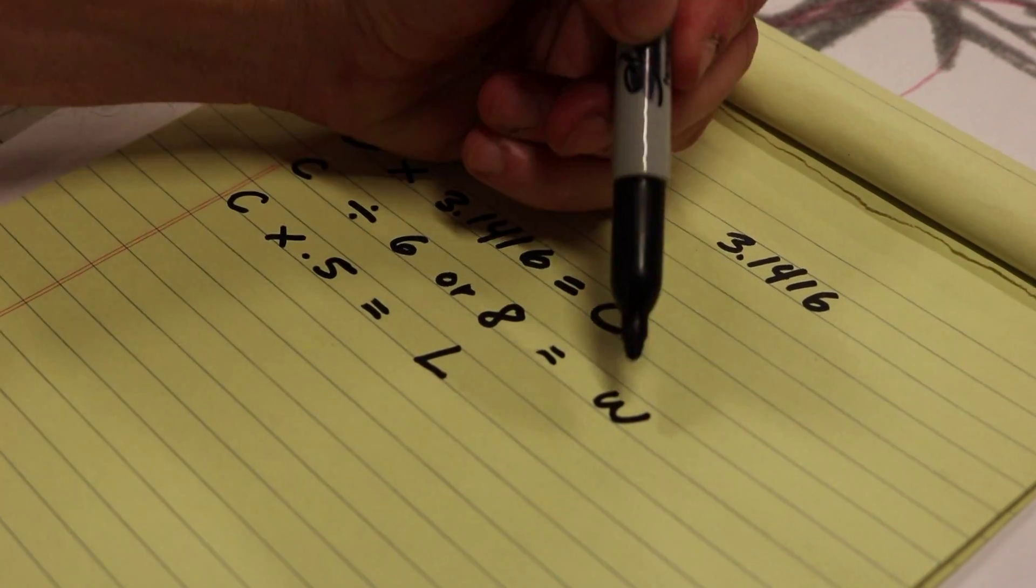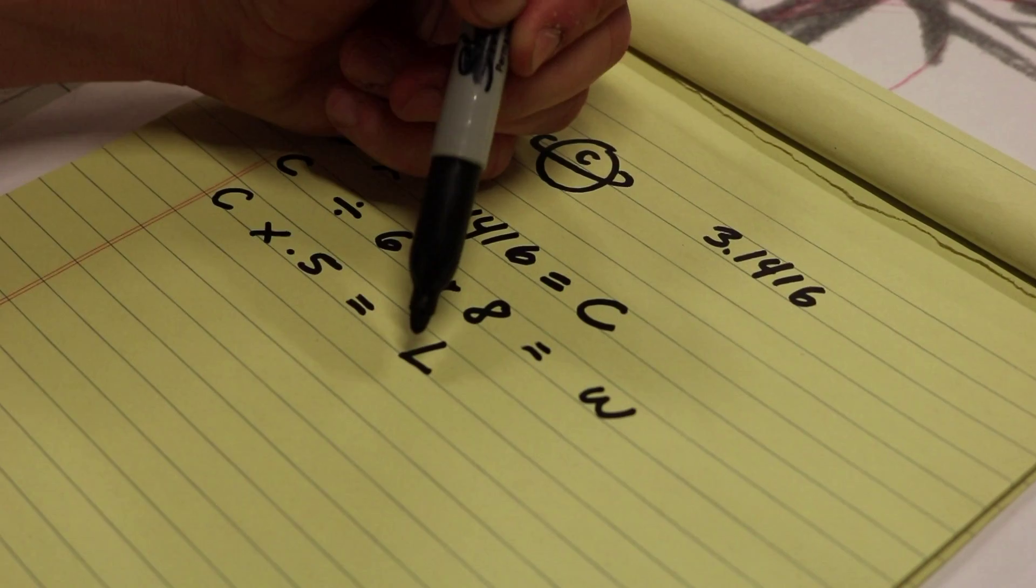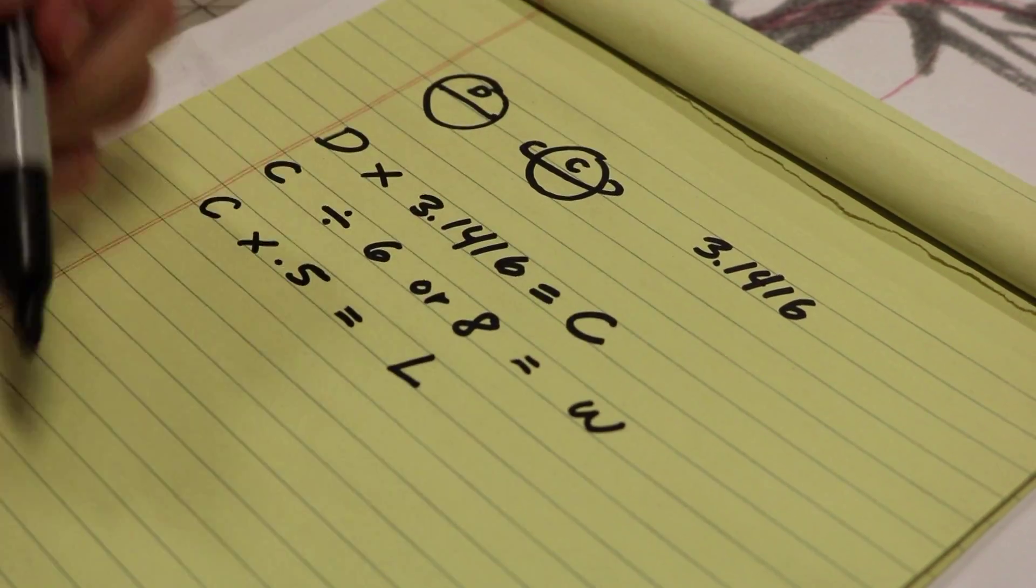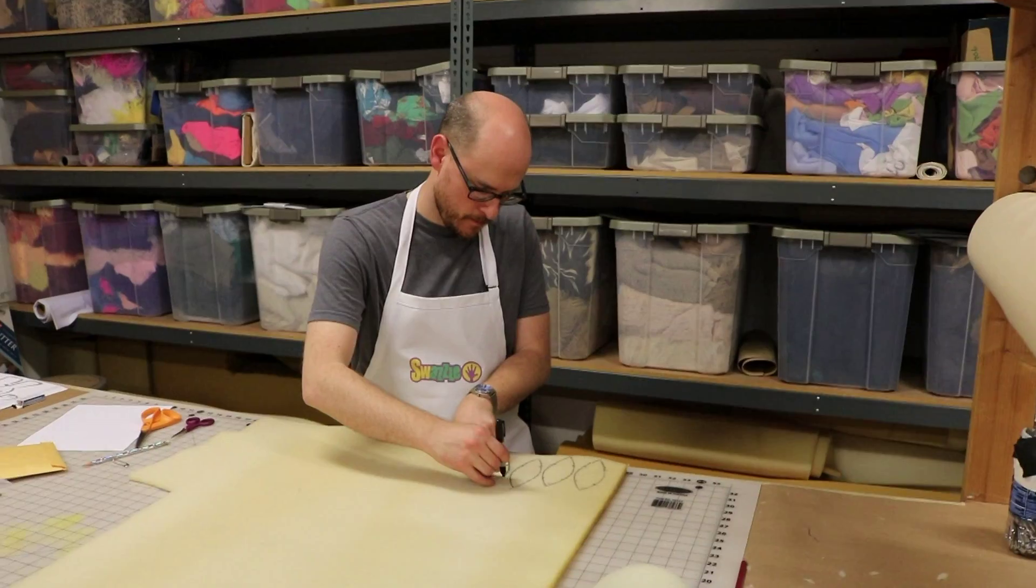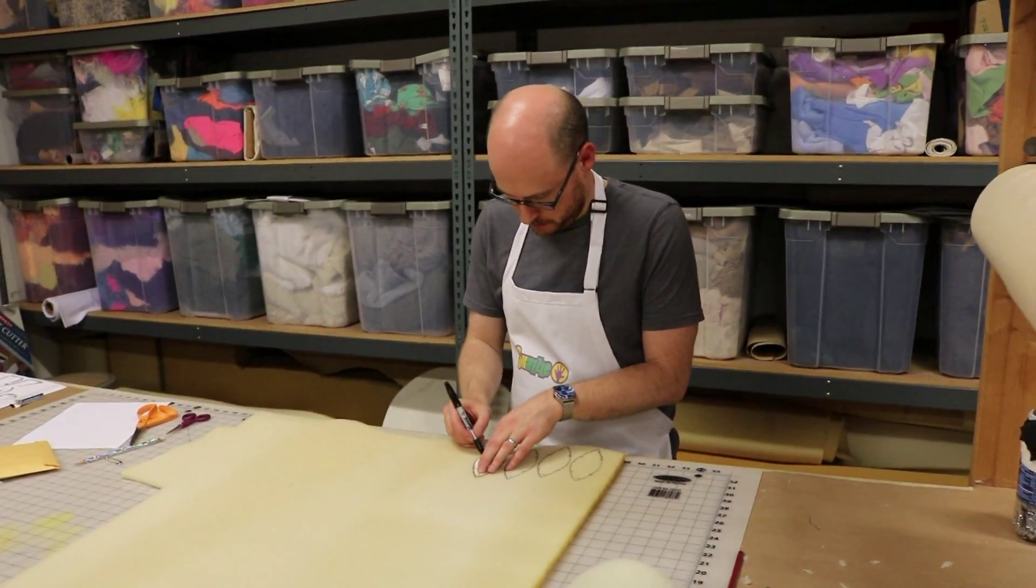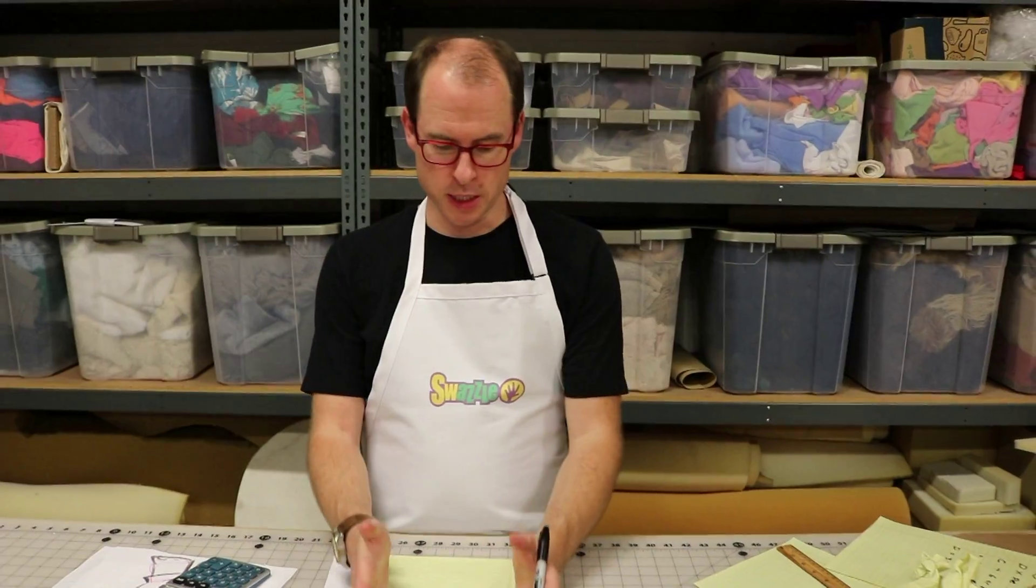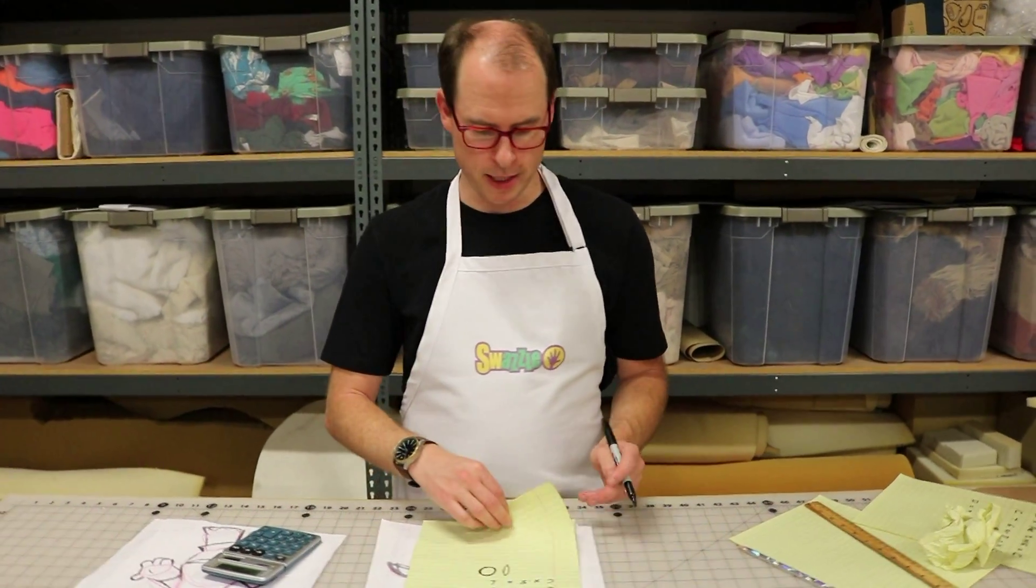So now we know how wide each leaf should be, how many leaves we should make, at what length they should be, and when all of that goes together you will be able to turn a flat piece of foam into a sphere. So this is our equation. Let's put it into practice.